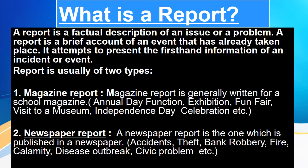A report is usually of two types. Number one: magazine report. A magazine report is generally written for a school magazine. Some examples are annual day function, exhibition, funfair, visit to a museum, independence day celebration, and so on. Number two: newspaper report. A newspaper report is the one published in a newspaper. Some examples are accidents, theft, bank robbery, fire, calamity, disease outbreak, civic problems, etc.